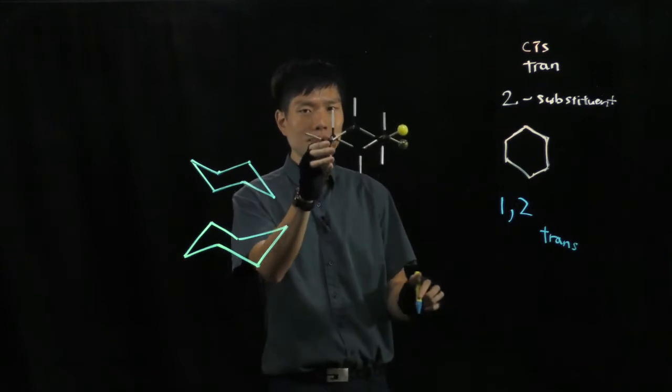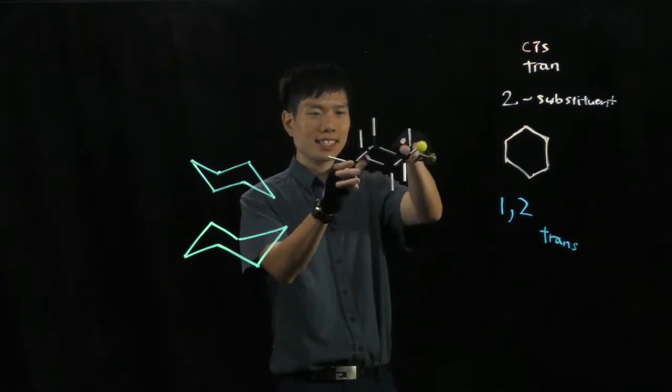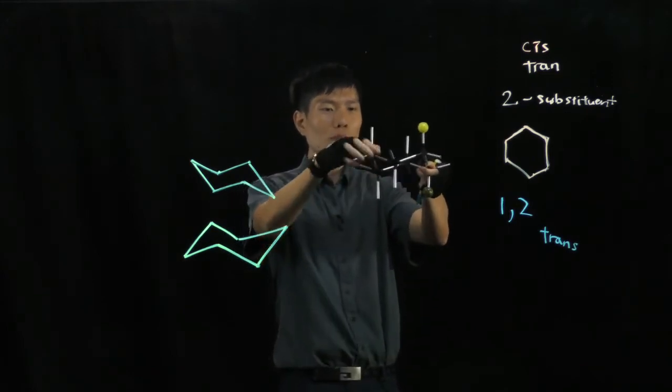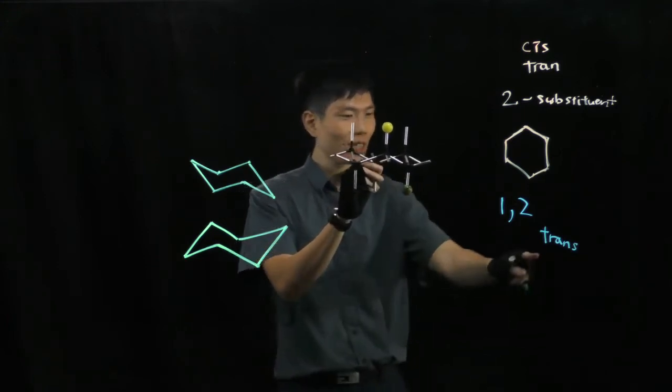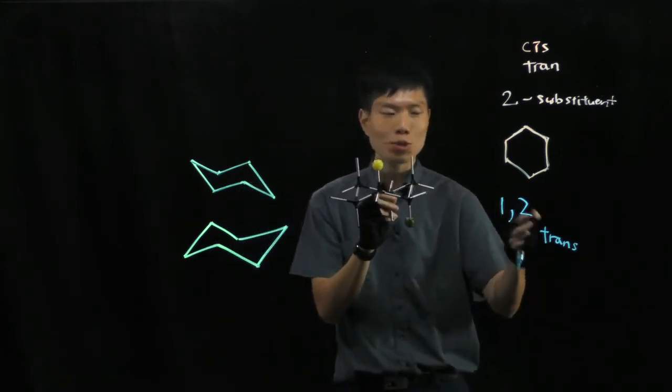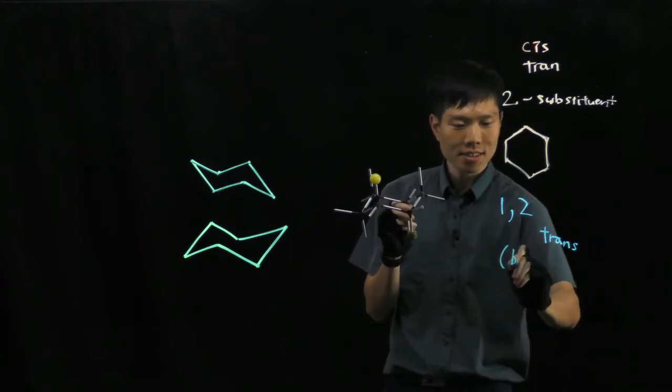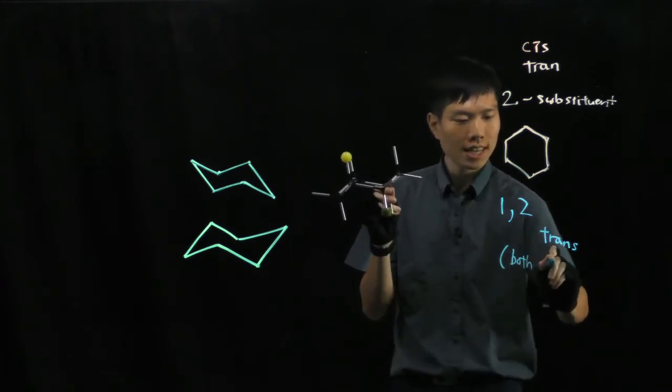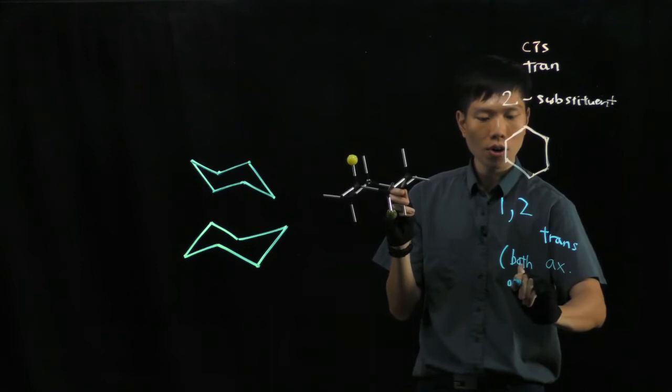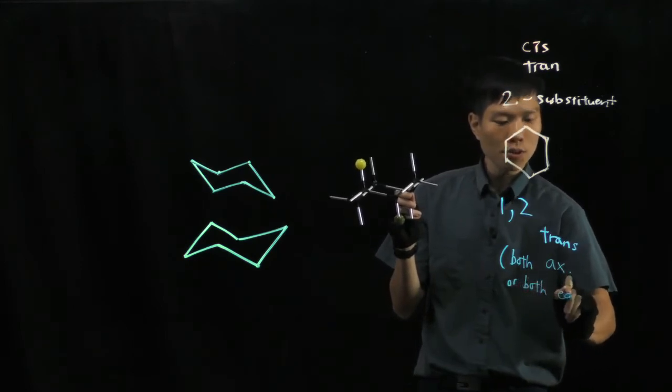Now if I do a ring flip from this, you see that now both balls point to the axial positions. So for trans, 1,2 disubstitution is either both axial or both equatorial.